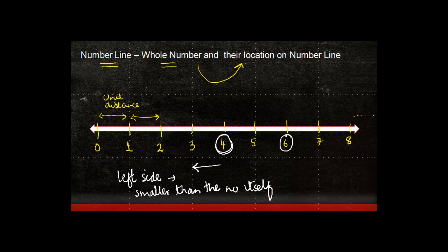If you look for 6 and you move towards the left, you get 5, 4, 3, and all of them are smaller than 6. Again, this is the second rule that we get, which is that all the numbers on the left side of a given number are smaller than the number itself.